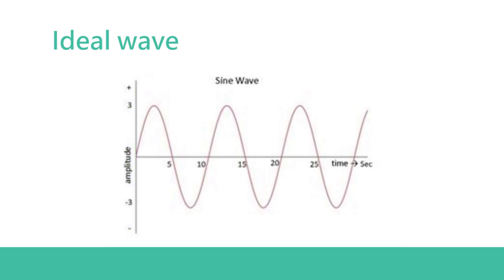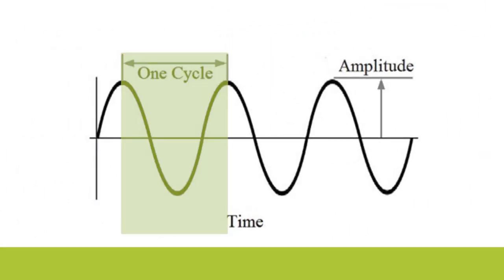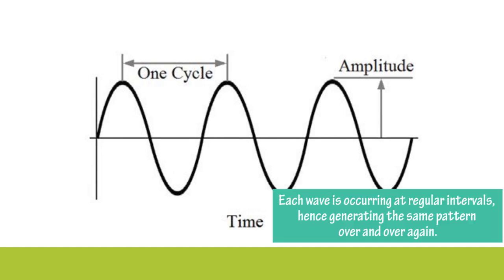You see on the vertical axis we have amplitude, which is the height of the wave, which we discussed earlier in the previous video. This shows one cycle. The number of cycles—when you say 100 hertz it means 100 cycles, usually per second. The horizontal axis is time; the vertical axis is amplitude. This is a sine wave with each wave occurring at regular intervals, generating the same pattern over and over again.